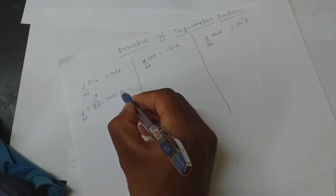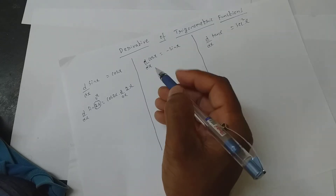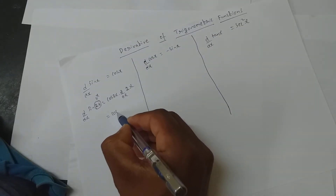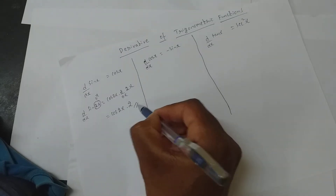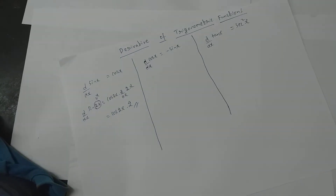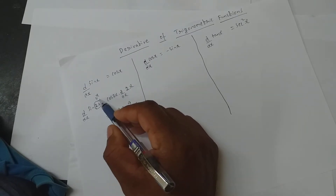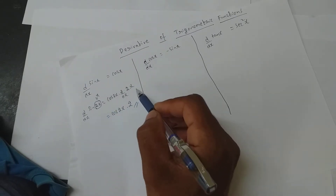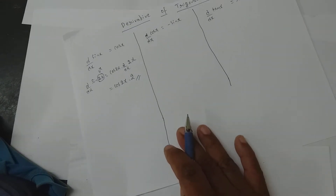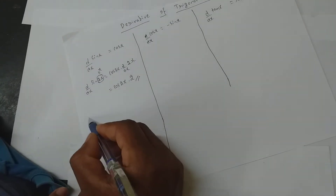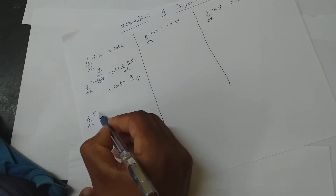...this is where students miss it — into d/dx of 2x. So it is cos 2x into 2, which comes out. That is the answer. In place of x, whatever you have assumed, that derivative must and should be there at the end.